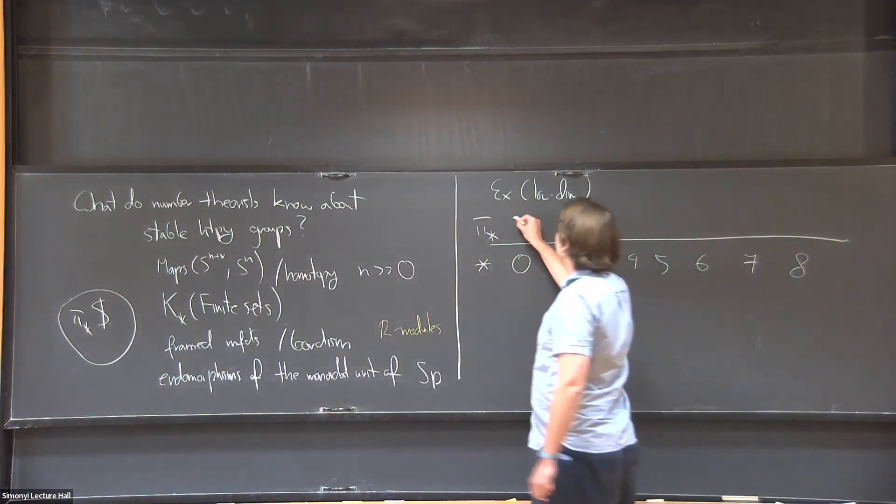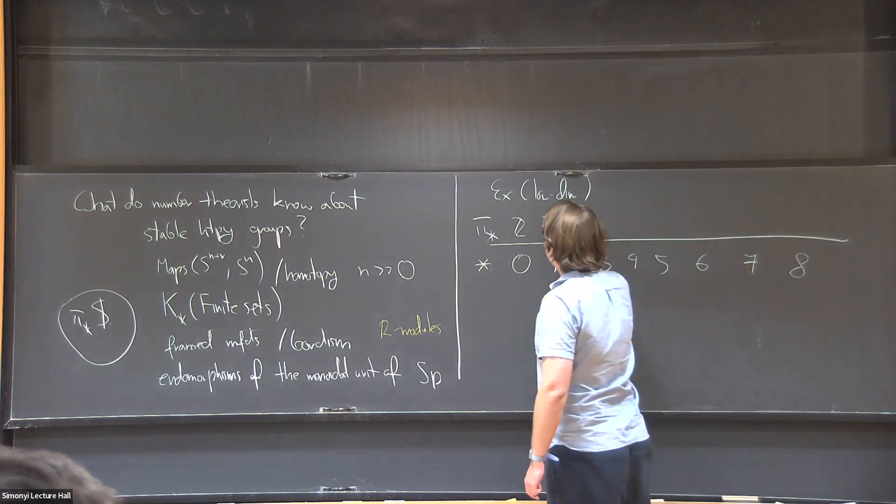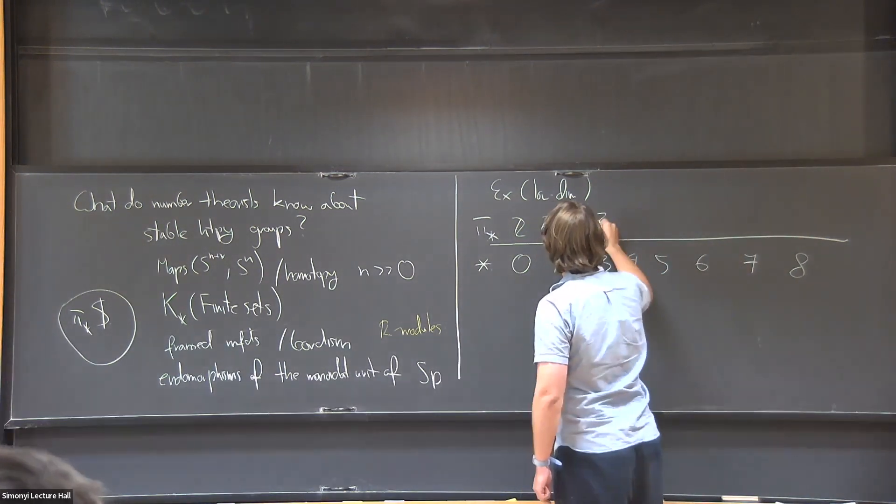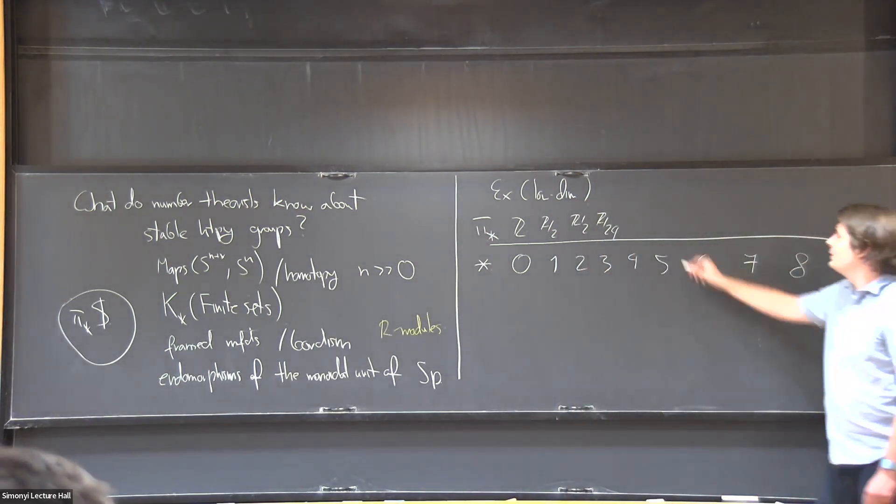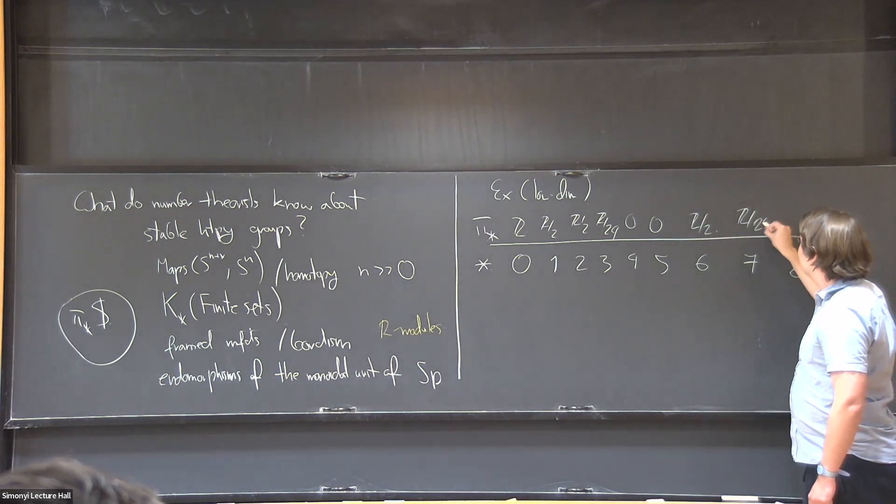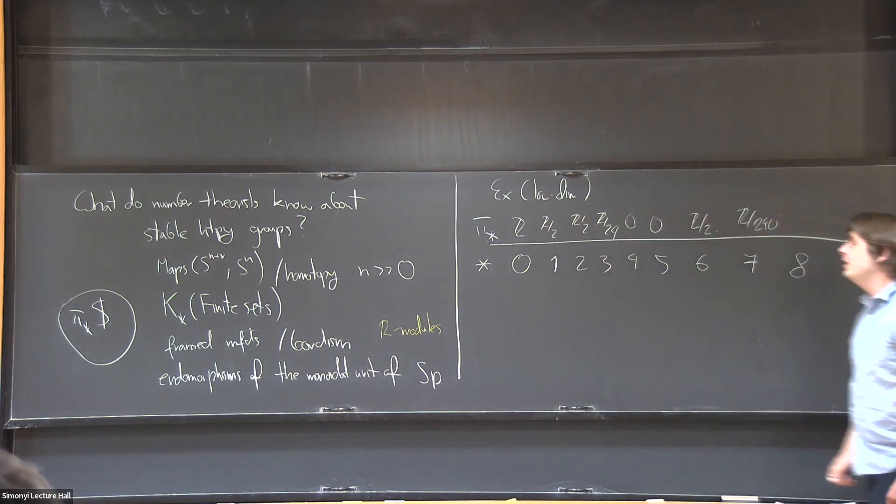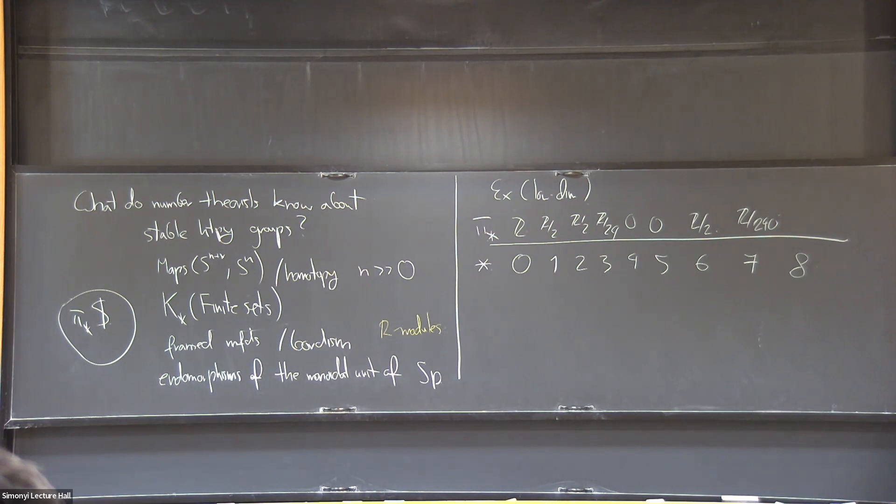So let's see a few of those groups, how do they look in low dimensions. You're going to feel what kind of problem we're after. In dimension zero we have the only infinite group, the integers, generated by the identity of the sphere. After that there's Z mod 2, Z mod 2, Z mod 24, that becomes more interesting, then zero, zero, Z mod 2, then we have Z mod 2... And after the first one all of them are finite. Now you might hope perhaps they're always cyclic. That's not true. The next one is Z mod 2 times Z mod 2, and so on and so forth.